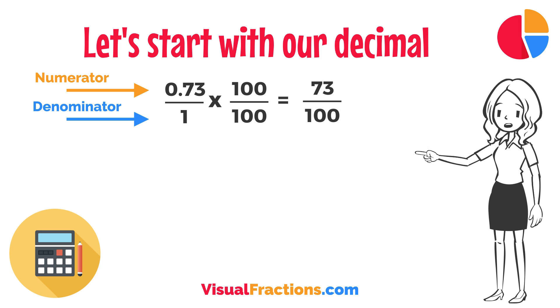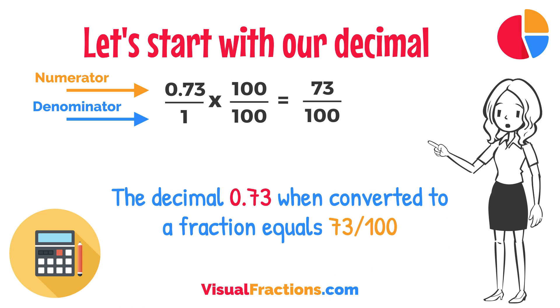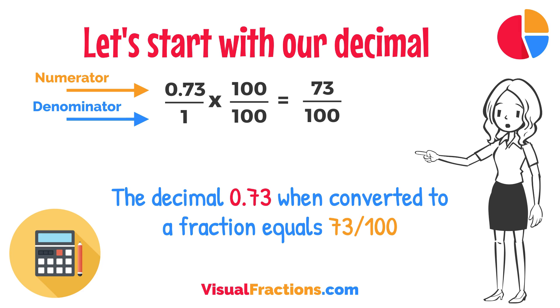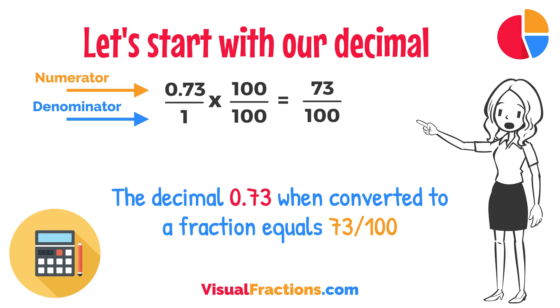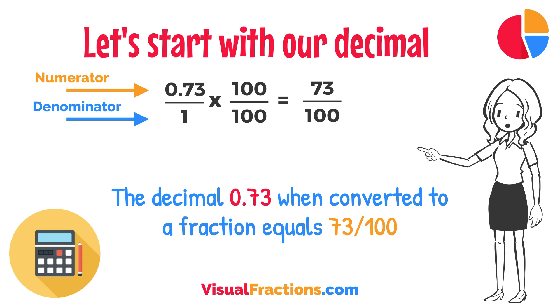And there you have it. The decimal 0.73 when converted to a fraction equals 73 one-hundredths. This fraction is in its simplest form and cannot be further simplified.